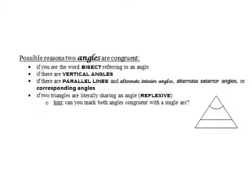Some things you should look for with regard to angles: again, if we see the word bisect, but this time referring to an angle — if the given is saying an angle is being bisected — then that is a clue that two smaller angles are going to be congruent to each other.